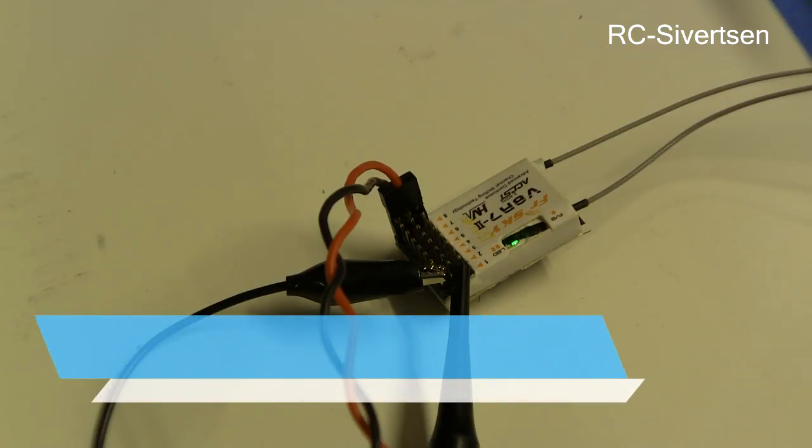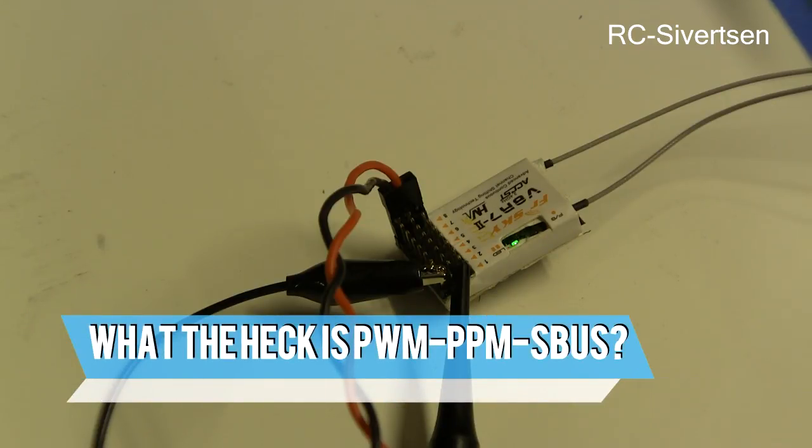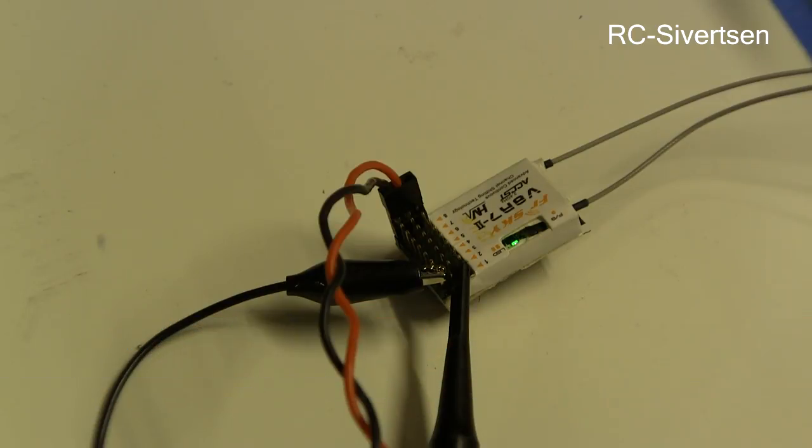Hi and welcome to my channel. I'm sitting here with a standard receiver from FreeSky. This is an eight channel receiver which is using PWM to communicate with the servo.